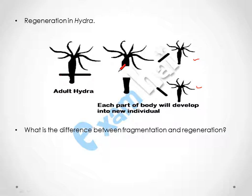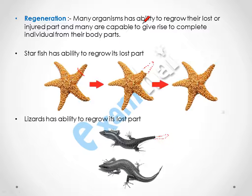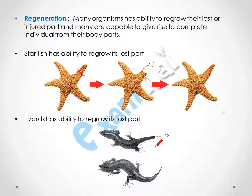What is the difference between fragmentation and regeneration? In fragmentation, the organism breaks into fragments and each fragment develops into a new organism. Whereas in regeneration, the organism may or may not develop into a new individual. In regeneration, an organism sometimes develops only its lost part — for example, a broken tail cannot give rise to a full body of a lizard, but this process is still called regeneration.